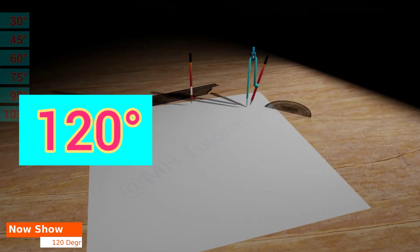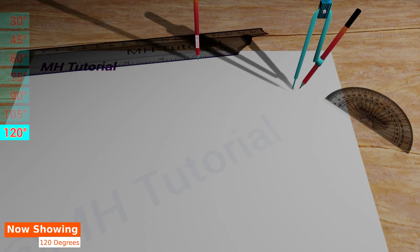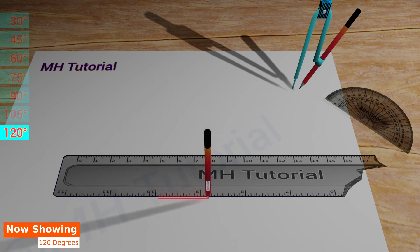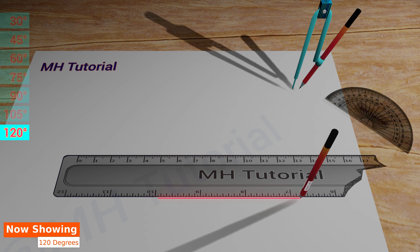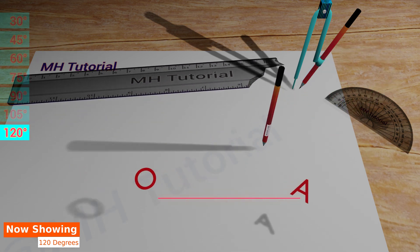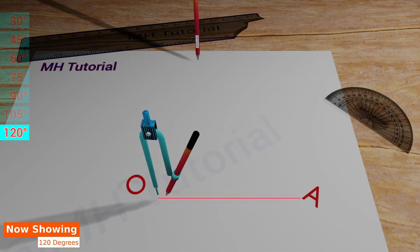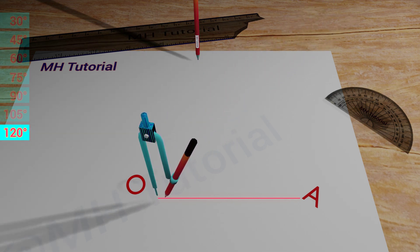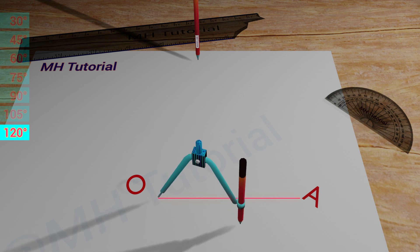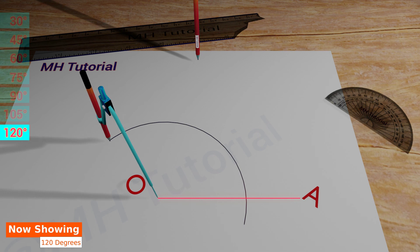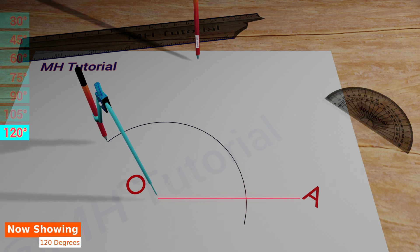120 degree angle. First of all, with a scale and a pencil, a line segment is drawn on the middle of the page. The two endpoints are named O and A. Next, a pencil compass is taken. A large circle arc is drawn with the tip of the compass placed at the point O. The arc of the circle intersects the straight line OA at point X.